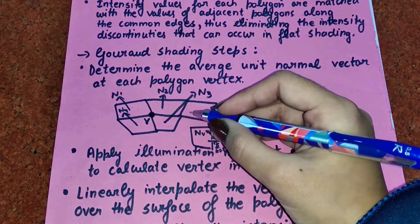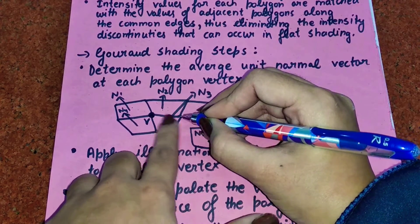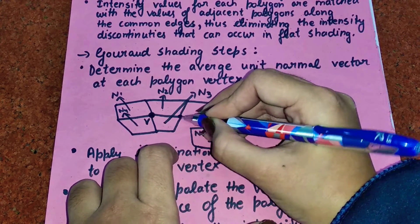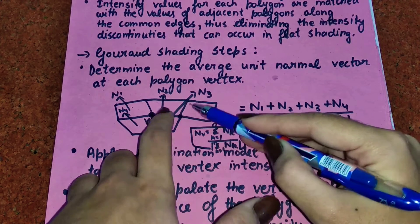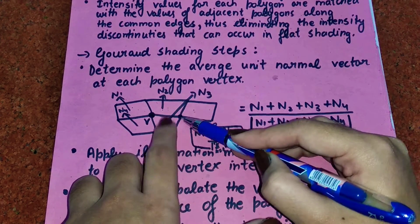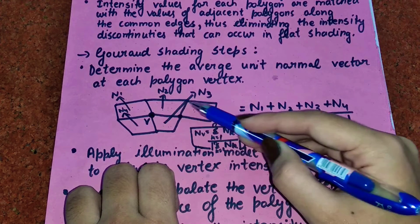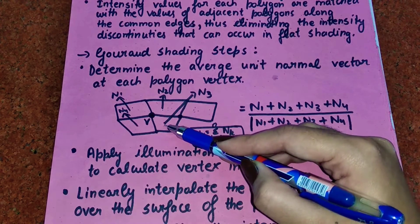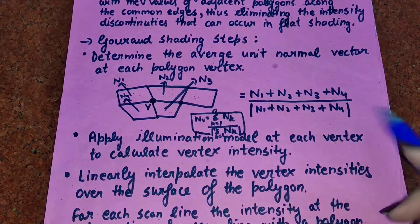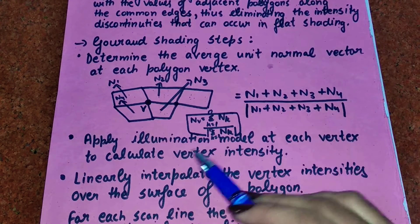In the same way, if I want to calculate the average unit normal vector at another vertex, I take the normals of only those polygons connected to that point. For example, if only three polygons are connected to that vertex, then the average is computed using those three normals.